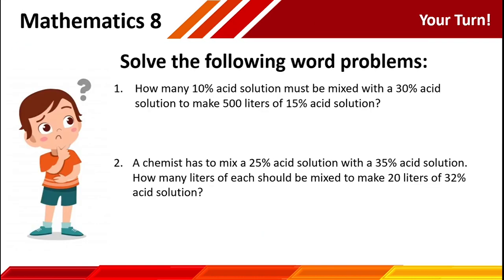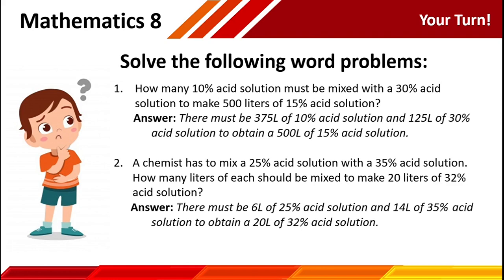Now it's your turn. Solve the following word problems. For number 1: how many liters of a 10% acid solution must be mixed with a 30% acid solution to make 500 liters of 15% acid solution? For number 2: a chemist has to mix a 25% acid solution with a 35% acid solution. How many liters of each should be mixed to make 20 liters of 32% acid solution? You may pause the video, and we will reveal the answer afterwards. The answers: for number 1, there must be 375 liters of 10% acid solution and 125 liters of 30% acid solution to obtain 500 liters of 15% acid solution. For number 2, there must be 6 liters of 25% acid solution and 14 liters of 35% acid solution to obtain 20 liters of 32% acid solution.